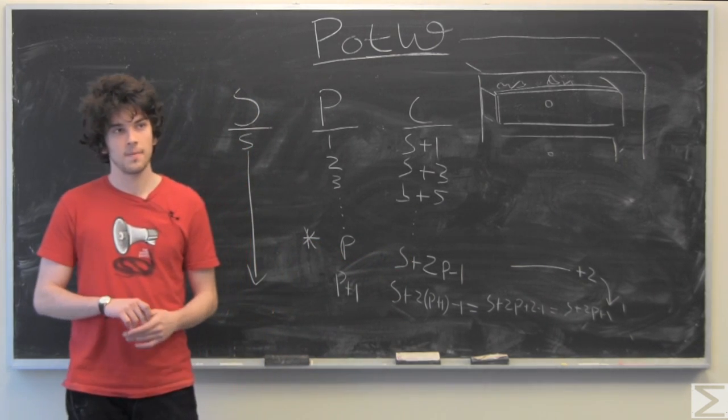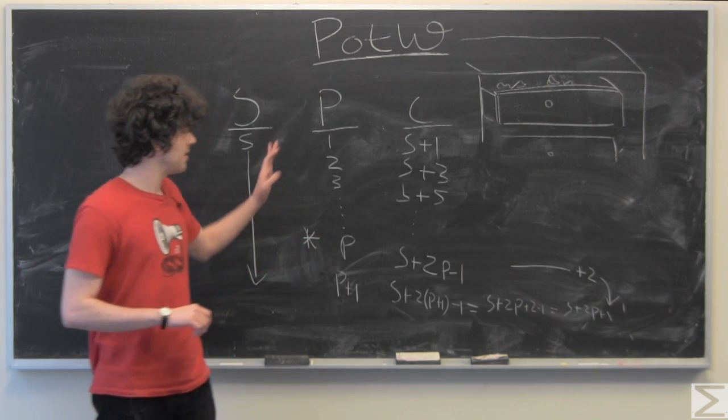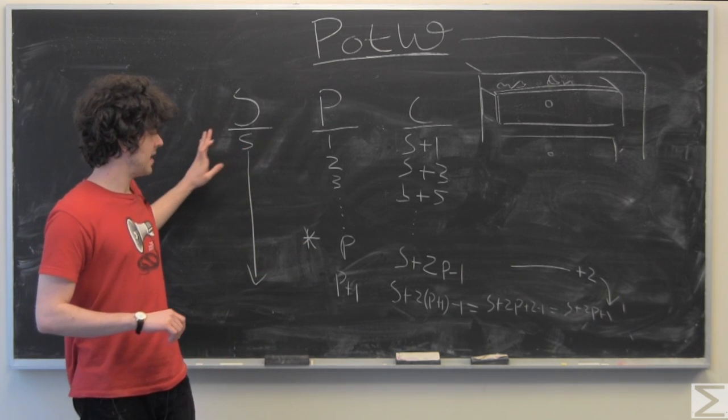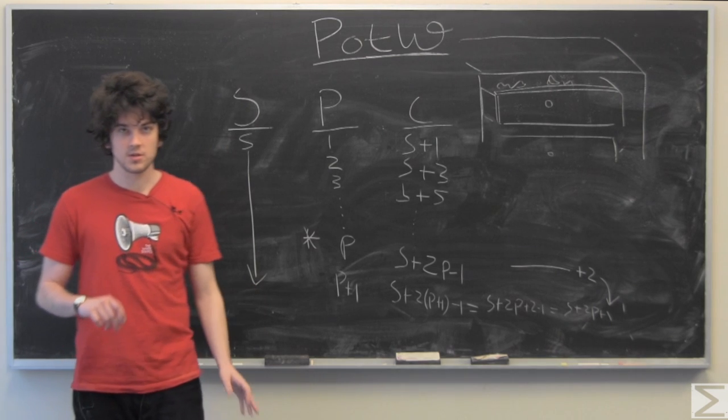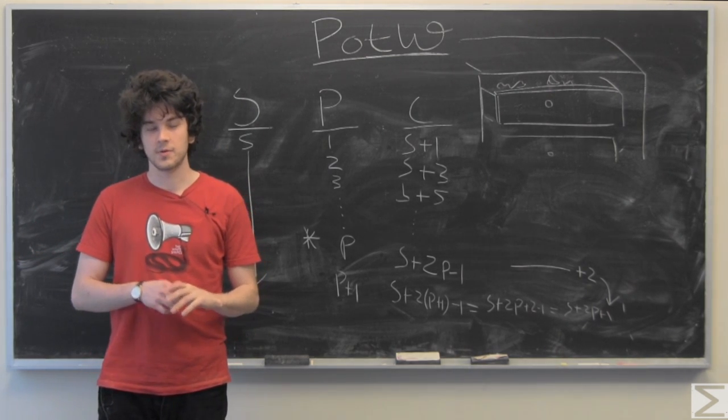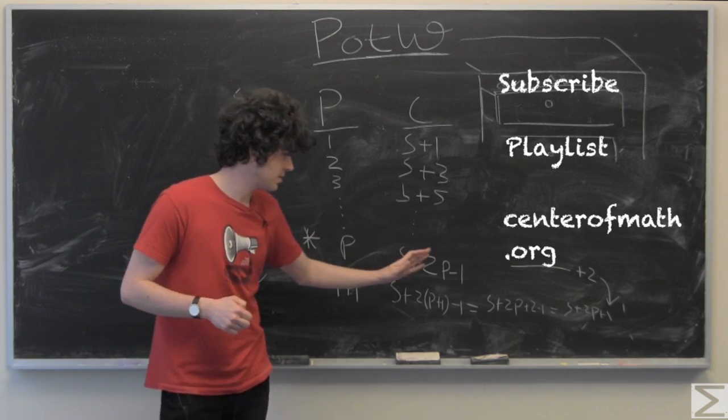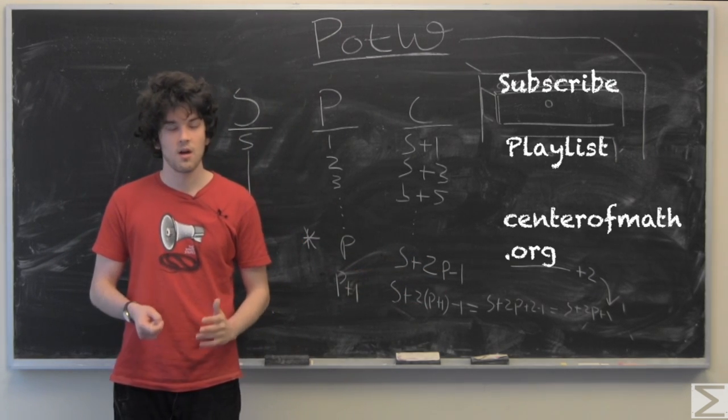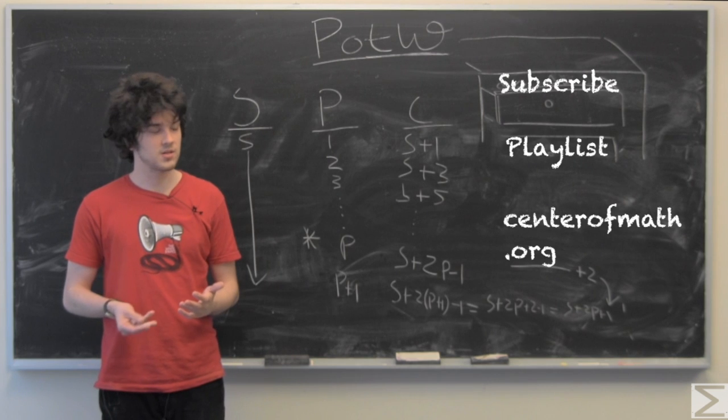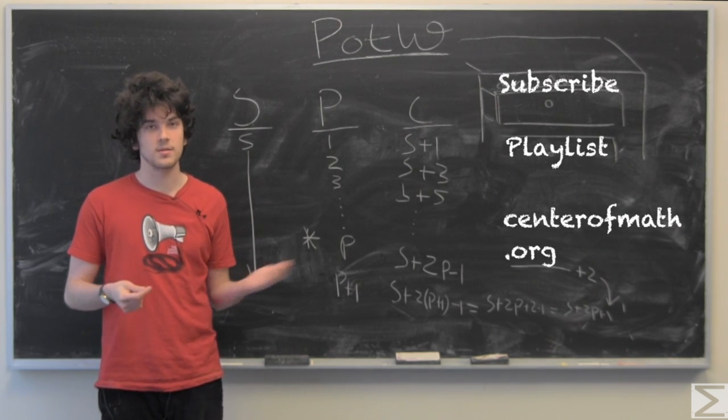So we can safely say that for any given variation of socks, and if we want any number of pairs, we can choose s plus 2p minus 1 socks, and that's how many socks you're going to need to choose to be guaranteed p pairs.